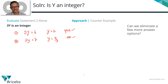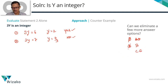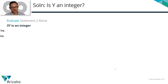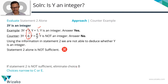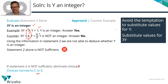At the end of evaluating statement 1 we had eliminated A and D, leaving B, C, or E. Since statement 2 is also not sufficient, we eliminate answer option B — which says 2 alone is sufficient. We are now down to C or E. The takeaway is exactly the same: do what the statement asks. I picked values for 3y — that's what you should do. Do not pick values for y directly.